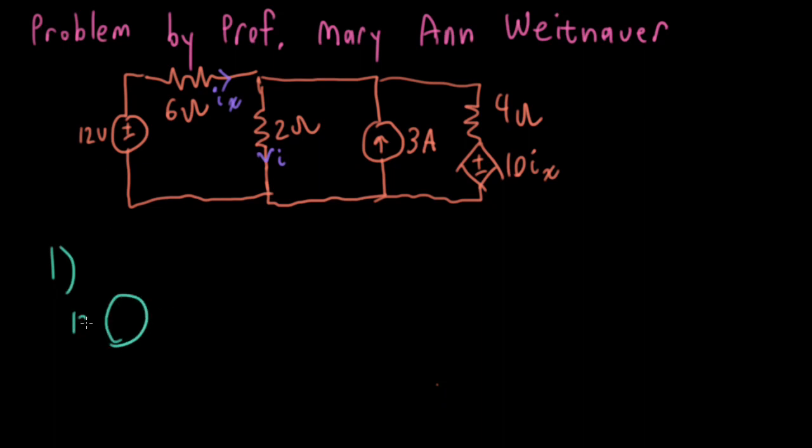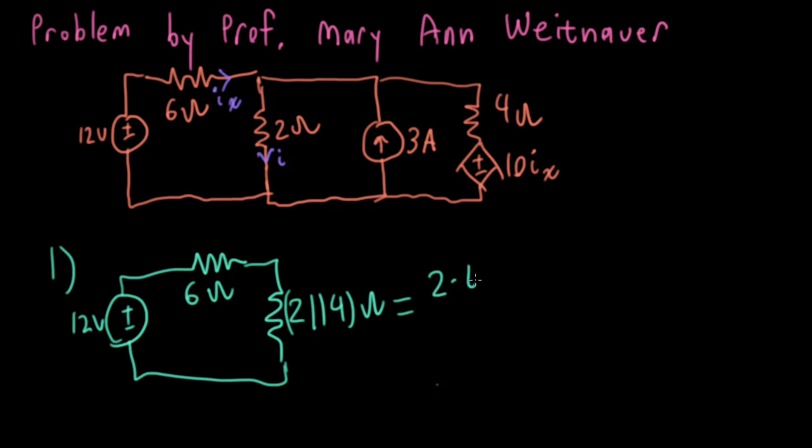So we have our 12 volt source, and that's going to induce a current flowing through the 6 ohm resistor in series with a 2 ohm resistor in parallel with a 4 ohm resistor. So I have 2 times 4 over 2 plus 4, so that's 8 over 6, or 4 thirds ohm.